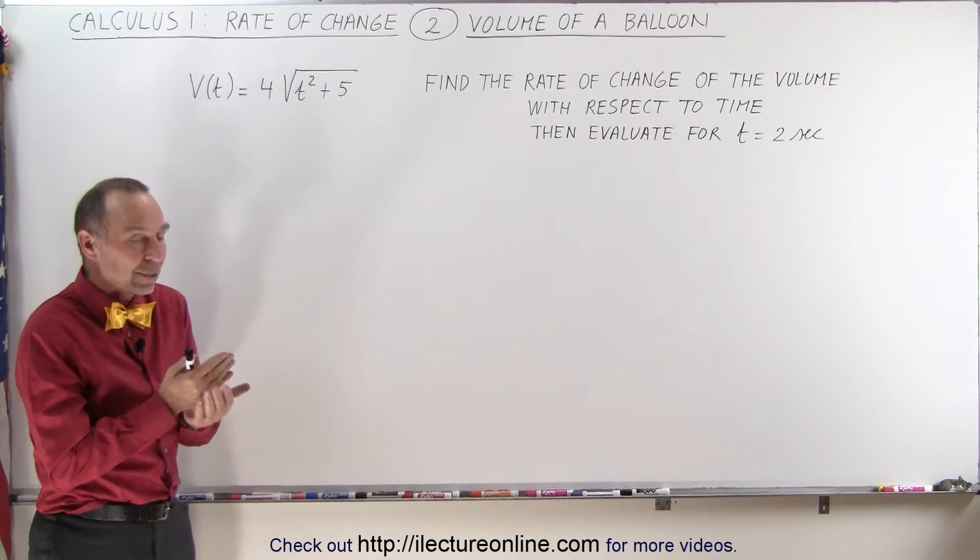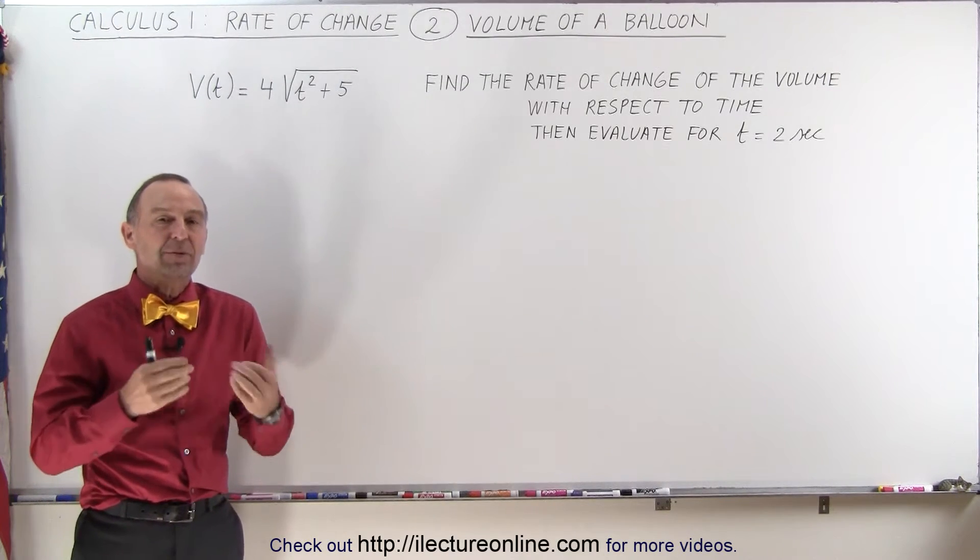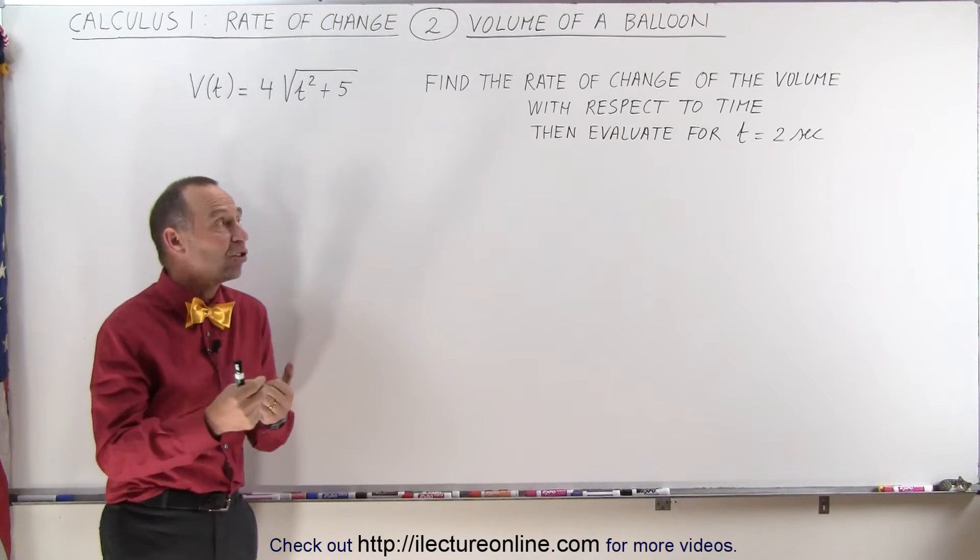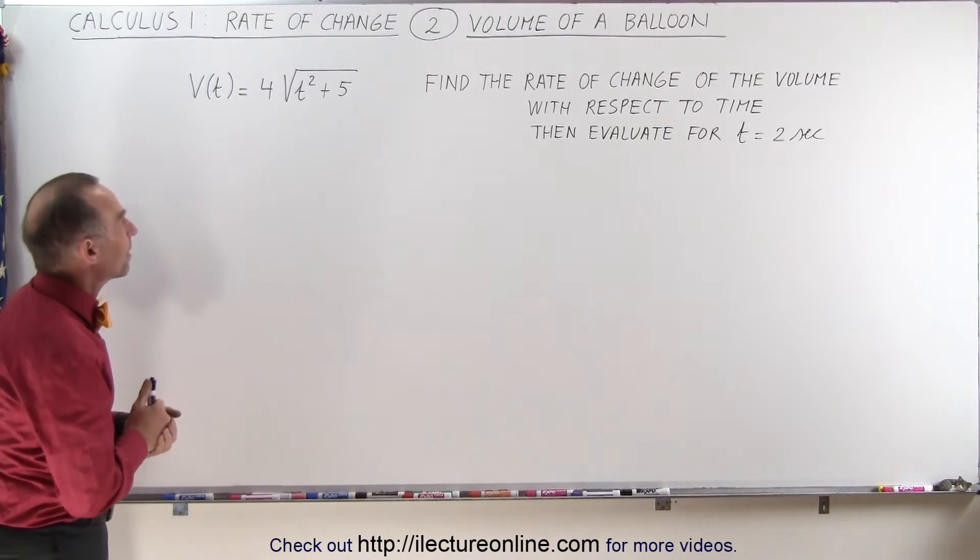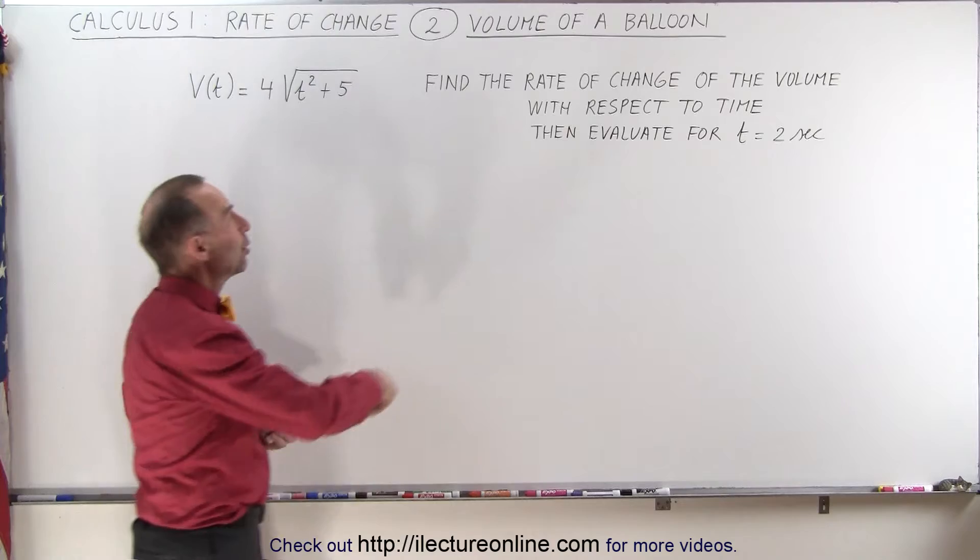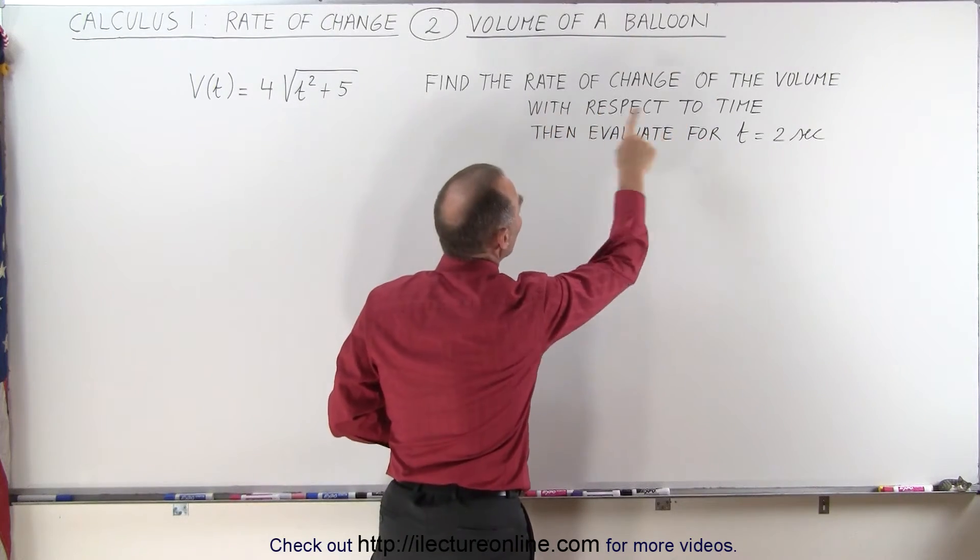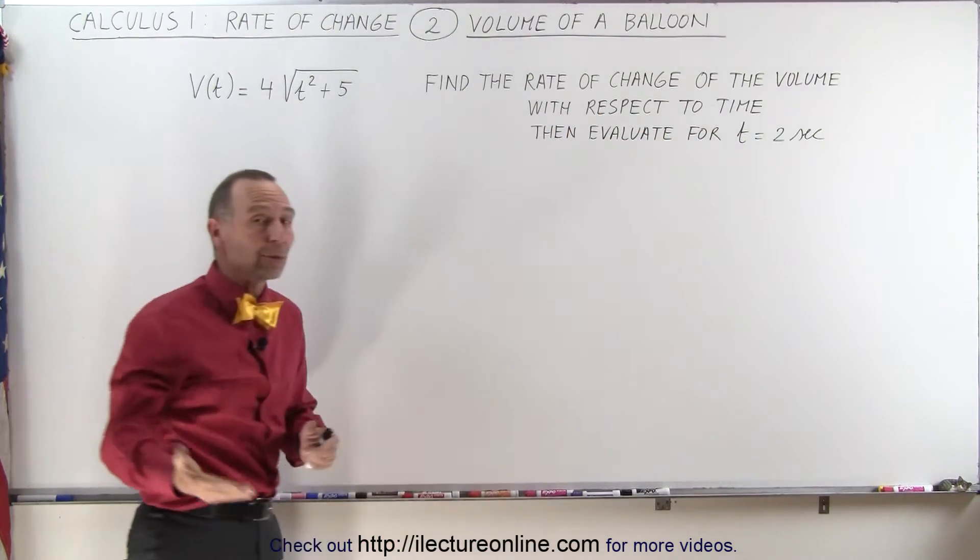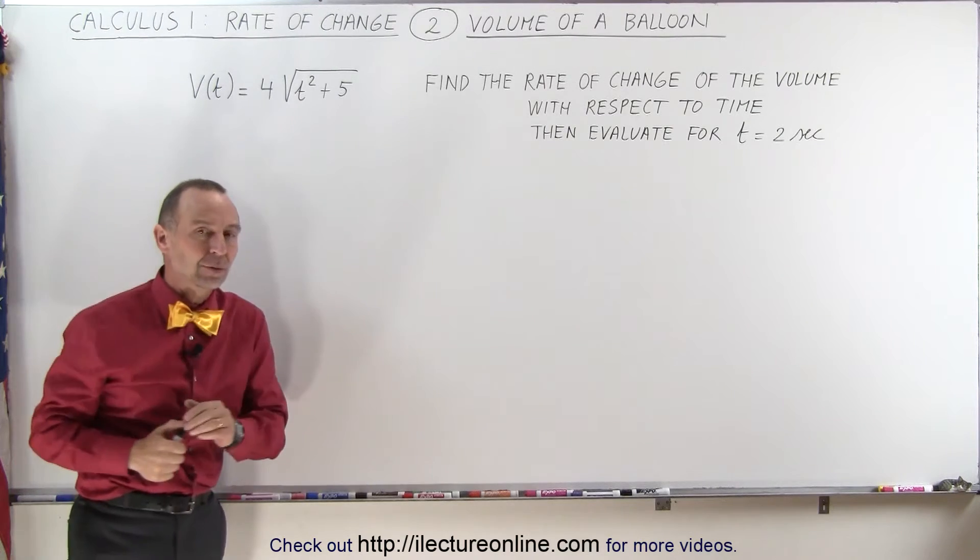Welcome to Electron Line. Here we're going to take a look at the volume of a balloon and how it changes with respect to time. So that's what we're looking for here. We're trying to find the rate of change of the volume with respect to time, and then we're going to evaluate that for time equals 2 seconds.